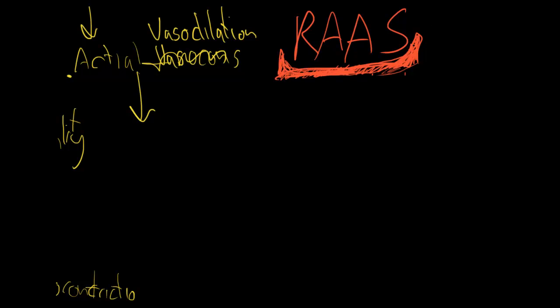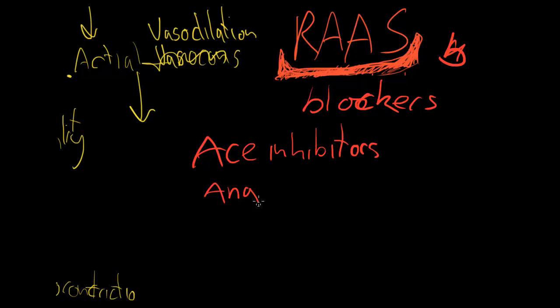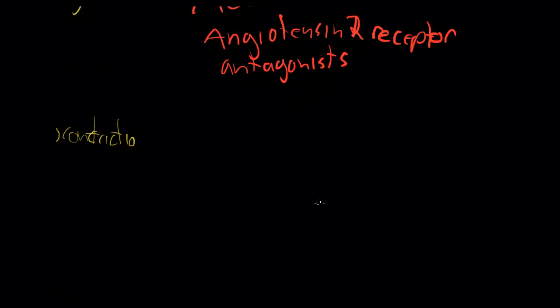Now talking about RAS blockers. Anything that block or inhibit the renin-angiotensin-aldosterone system. Things that block this are your ACE inhibitors and your angiotensin-2 receptor antagonists. ACE inhibitors prohibit the ability of ACE to actually convert angiotensin to angiotensin-2. Whereas angiotensin-2 receptor antagonists essentially block the receptors for angiotensin-2, block its effects.